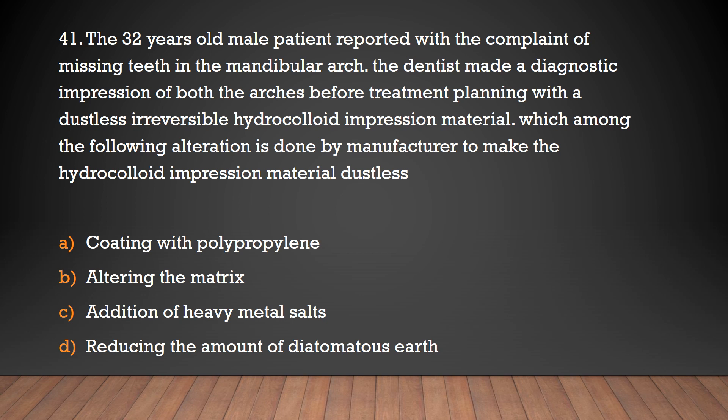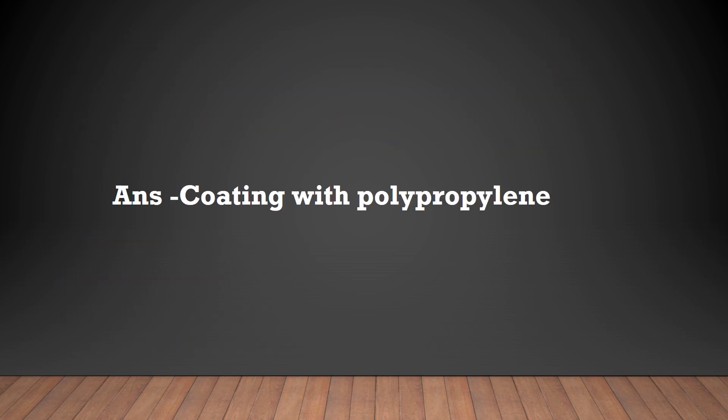With a dustless irreversible hydrocolloid impression material — which among the following alteration is done by the manufacturer to make the hydrocolloid impression material dustless? Coating with polypropylene, altering the matrix, addition of heavy metal salts, or reducing the amount of diatomaceous earth. The answer is: coating with polypropylene.